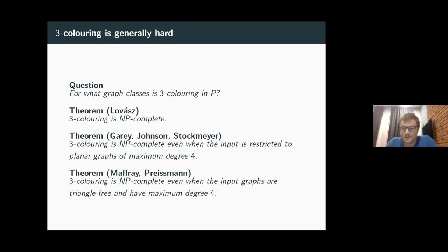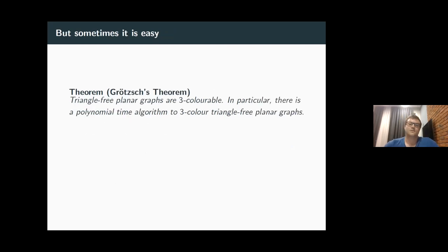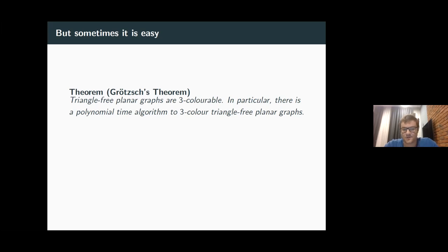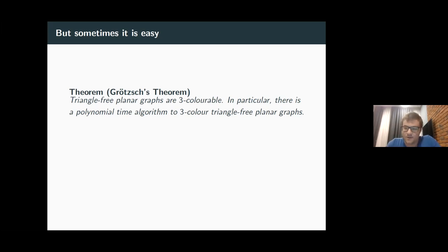Despite that, we're going to talk about coloring graphs on surfaces. When you talk about coloring triangle-free graphs on surfaces, you should bring up Grötzsch's theorem, which says that triangle-free planar graphs are three-colorable. This is maybe surprising given those NP-completeness results — three-coloring was NP-complete for triangle-free graphs and for planar graphs separately, but if you put both conditions together, all triangle-free planar graphs are three-colorable. In particular, there's a polytime algorithm; if you just want the decision problem, you just answer yes.